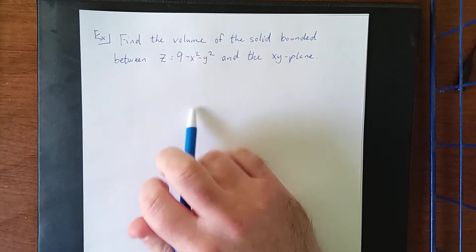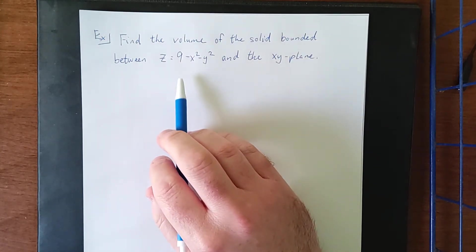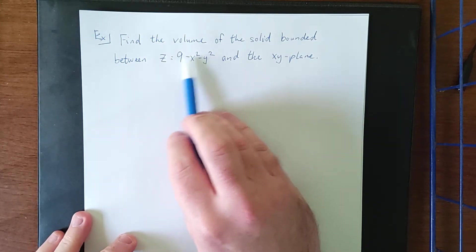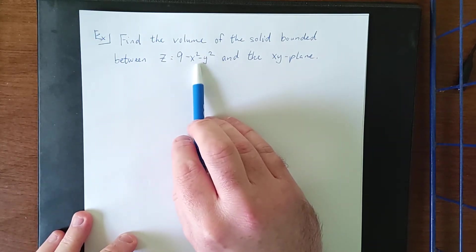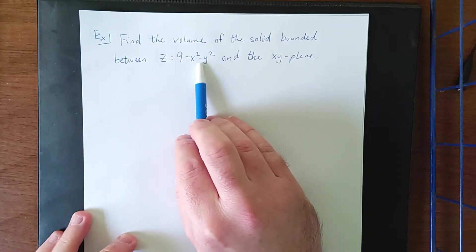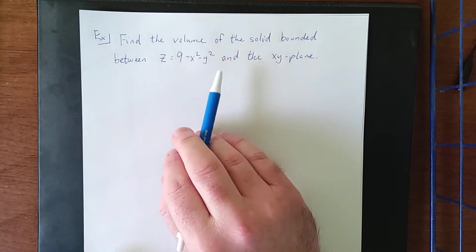Now volumes are represented by double integrals, or rather double integrals represent volumes of these sorts of things. Now as soon as you see any sort of semblance of x squared plus y squared in one of these things, or as long as they have the same sign, that's really what we're going to be looking for.